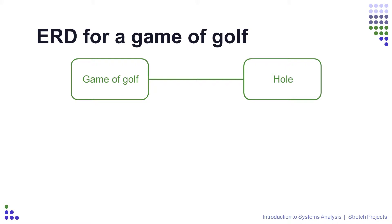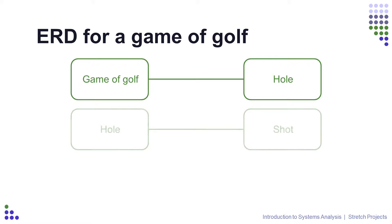This is what a very basic Entity Relationship Diagram looks like. Specifically, this diagram represents a game of golf. If you have ever played golf, you will know that one game consists of many holes, and if you play a hole in the game of golf, you take many shots to get the ball from the tee to the hole. Because there is some sort of relationship between a hole and a game of golf, you can draw a line between them. The same goes for the holes and the shots — you know there is some kind of relationship, so you can draw a line between them too.